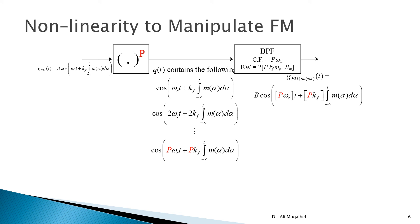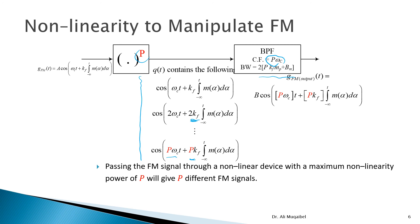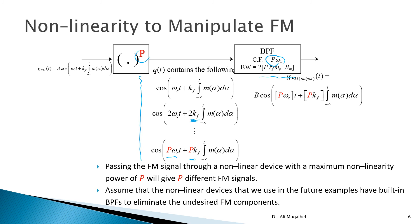This block shows that we can use a non-linearity of order p to generate multiple FM signals. Those signals differ in center frequency and bandwidth — the scaling factor kf. We use a band-pass filter to pick the signal of interest, usually the highest order. At the highest order, the center frequency will be p·ωc and the bandwidth follows Carson's rule: two times Δf plus the bandwidth of the message. By controlling and designing the band-pass filter, we can manipulate FM and generate many FM signals. Passing an FM signal through a non-linear device of maximum order p gives p different FM signals. We assume the non-linear device is always coupled with a built-in band-pass filter tuned to the highest possible non-linearity frequency.